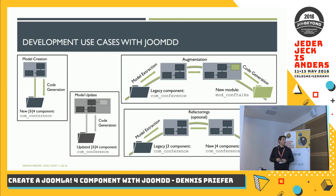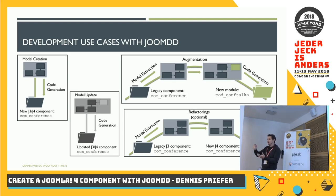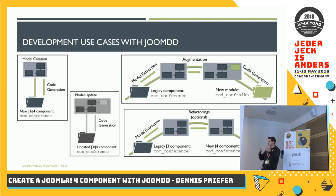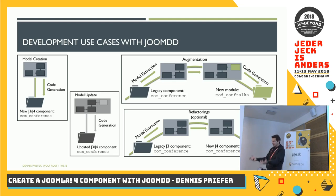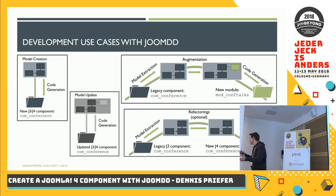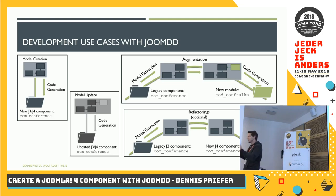The augmentation use case involves extracting model information from an existing extension, augmenting it at model level, and generating augmenting extensions that can work together with the existing extensions. So if you have a third-party component on your website and want to augment it by a new module, you can use the existing component as input for the model extractor, change it on model level, and generate the module. The last use case is migration — and fortunately Joomla 4 is coming, so we have an example to show how migration from Joomla 3 to Joomla 4 works.